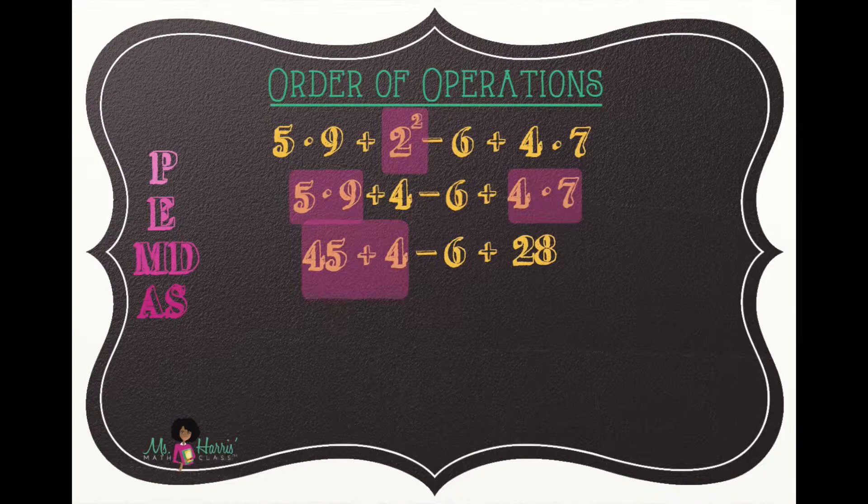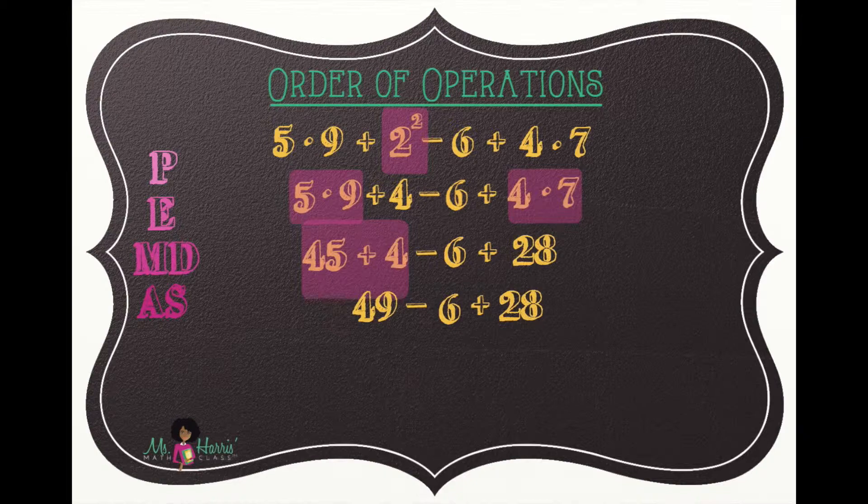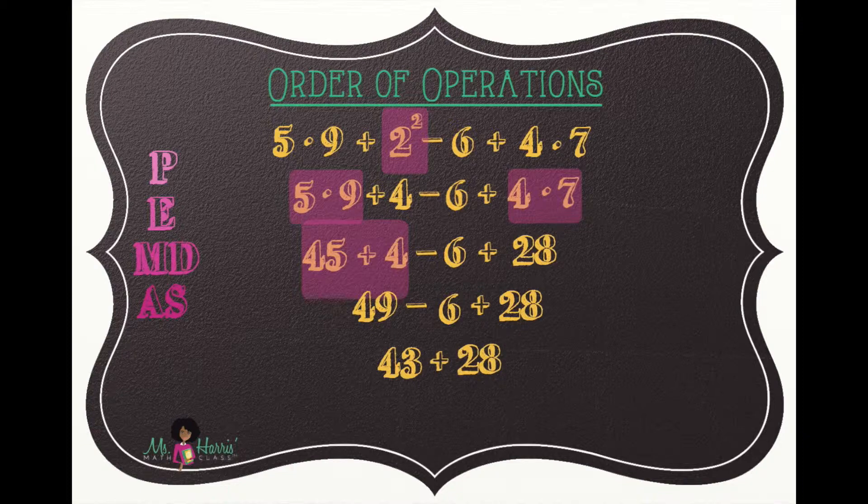Highlight 45 plus 4, which is 49. Bring down the remaining numbers and operations. Highlight 49 minus 6, which is 43. Bring down the remaining number and operation, and then 43 plus 28. 71.